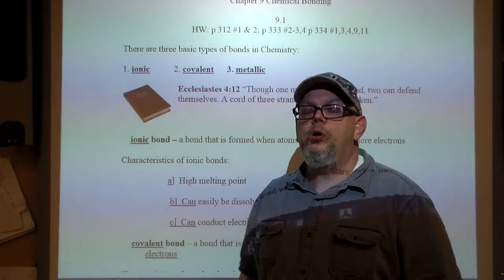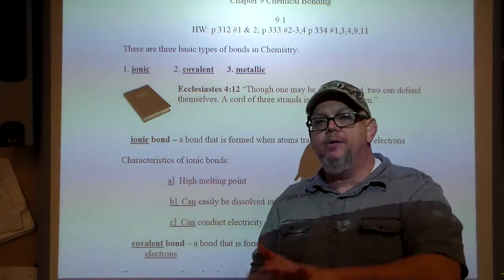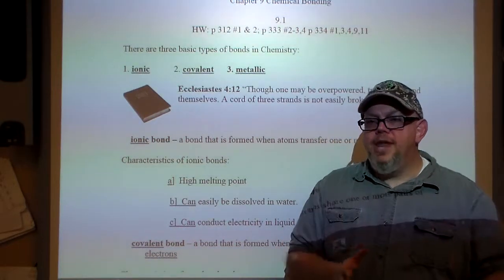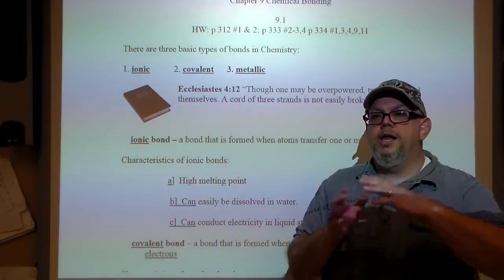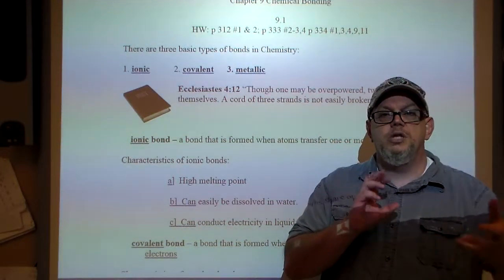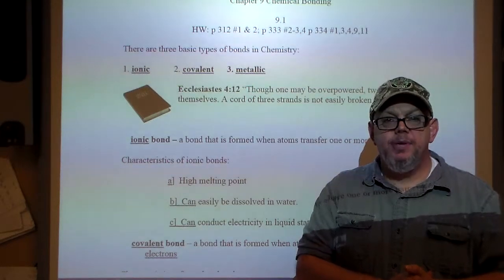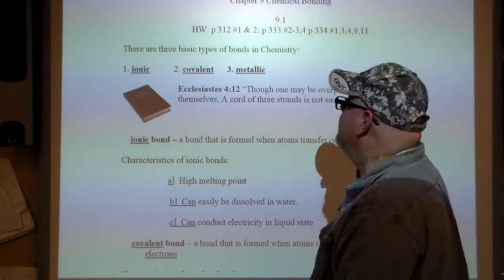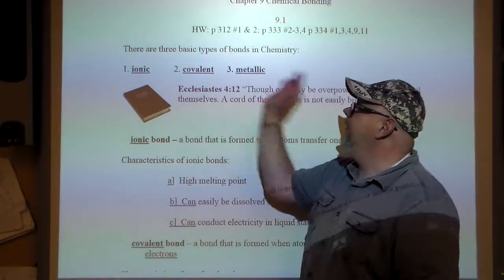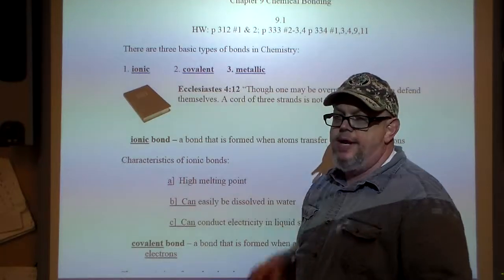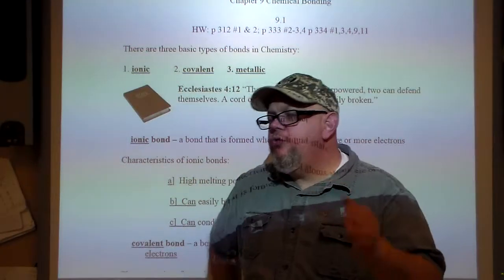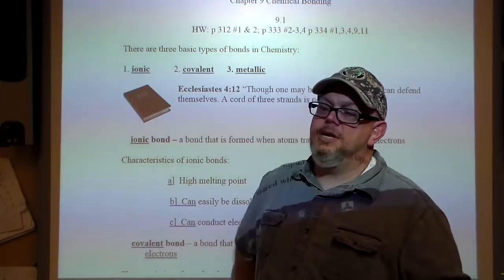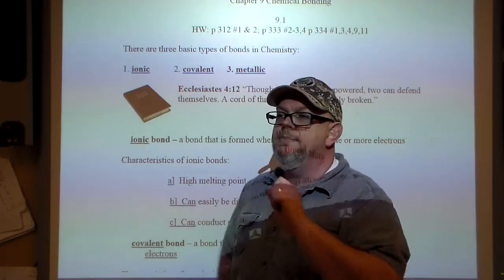Today we're going to look very quickly at bonding and electronegativity, and how we can predict what kind of bond between two atoms there could possibly be based off of their electronegativities. When we look at chemistry, there are two basic bonds: ionic and covalent.